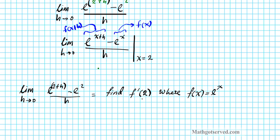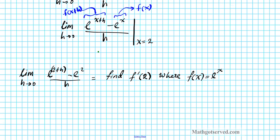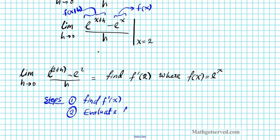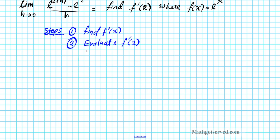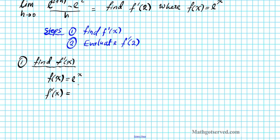We want to find f prime of 2 when f of x is e to the x. We're going to take two steps. Step number 1: find f prime of x. Step number 2: evaluate the derivative at the specified x value, so we'll find f prime of 2. Differentiate first, then evaluate at the specified x value. For step 1, f of x is equal to e to the x. The derivative of e to the x is e to the x — e to the x is its own derivative. So f prime of x equals e to the x.